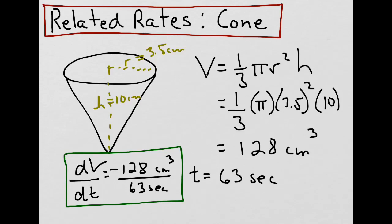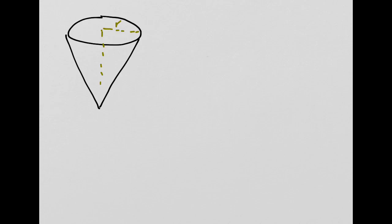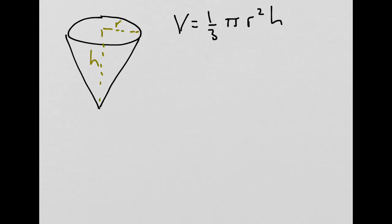Now let's relate this rate to that of the change in height of the water with respect to time. Let's come back to a cone with a certain radius r and a certain height h, and we know the volume of this cone is 1/3 π r² h. We notice that volume is dependent on both the radius and the height, but we're only interested in the height. So let's see if we can find a way to represent volume in terms of just height, rather than both height and radius.